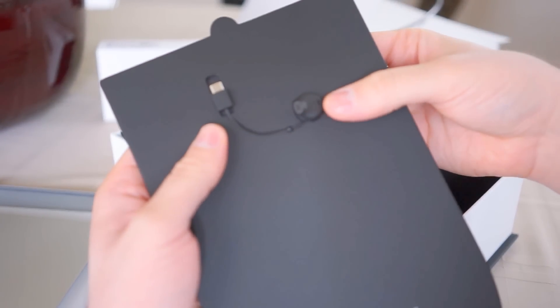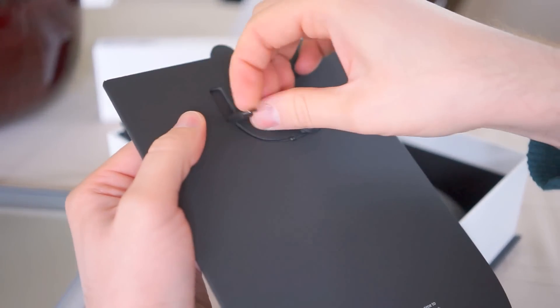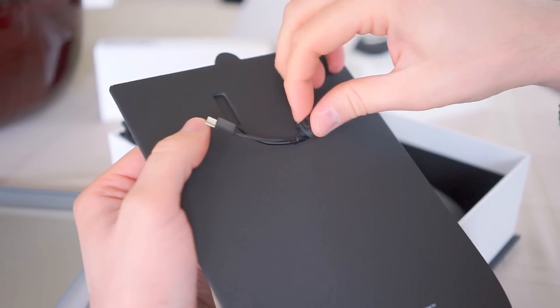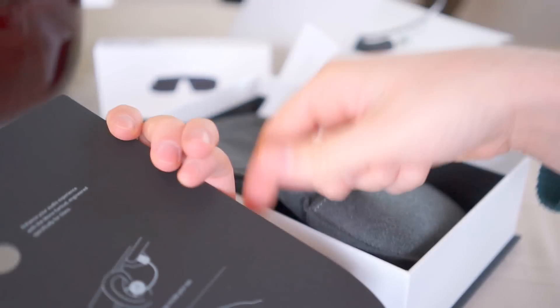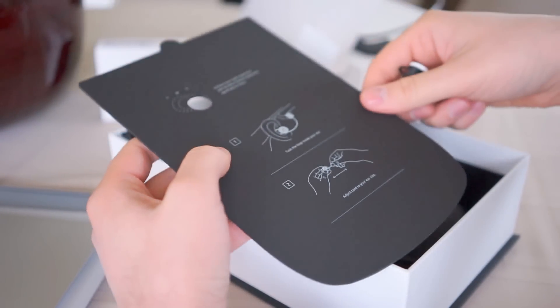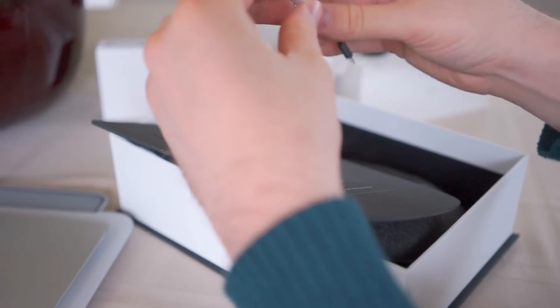But inside, you have the earbud. Now, this is the mono earbud attachment that will attach onto Google Glass via the micro USB port. And from there, here we go. And it tells you on this side how to do it. It just pops into your ear.